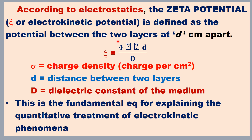It is equivalent to an electrical condenser of constant capacity because D is constant. These two layers are regarded as two plates separated by a distance D that is of the order of molecular diameter.